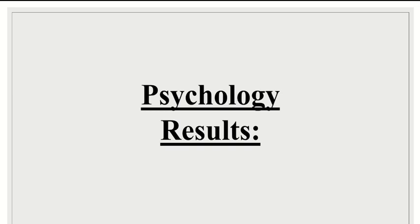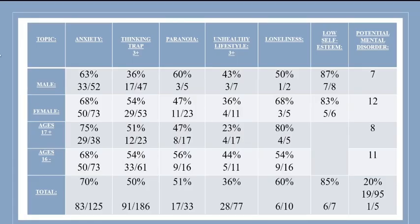I want to share some psychology results from a survey I conducted in December with 150 people across three different surveys. In terms of anxiety, 70% of people said they experienced excessive anxiety — social, generalized, agoraphobic, or similar. For thinking traps, 50% chose three or more thinking traps they experience regularly. For paranoia — meaning feeling that everyone around you hates you without evidence — 51% of people reported that belief.